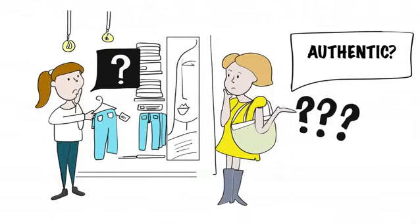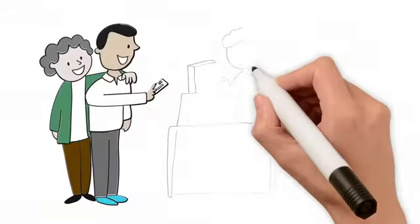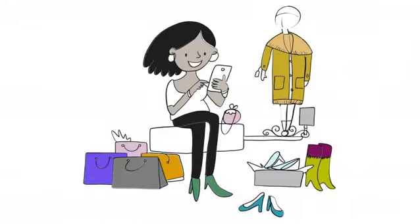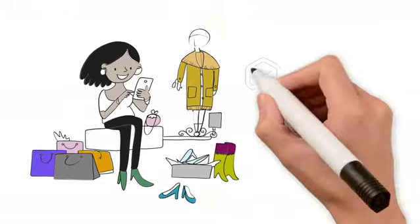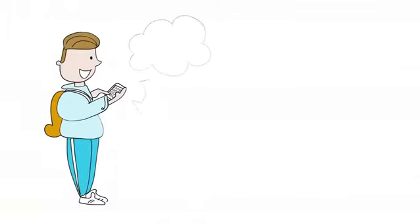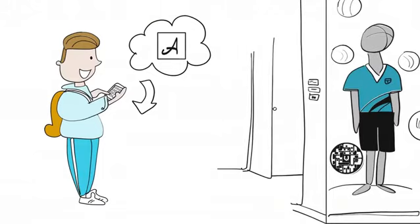Ever wanted to ensure the clothing you buy is authentic or get rewarded by brands by purchasing their clothing? Now you can with V apparel. Simply download the V code app. If an item has a V code on it, you can instantly scan the code.